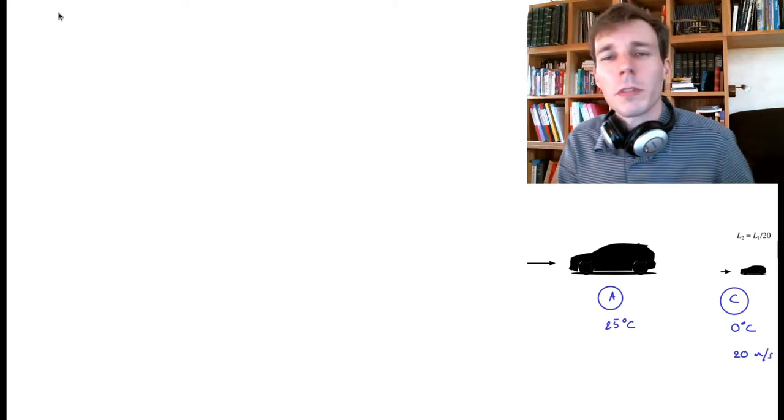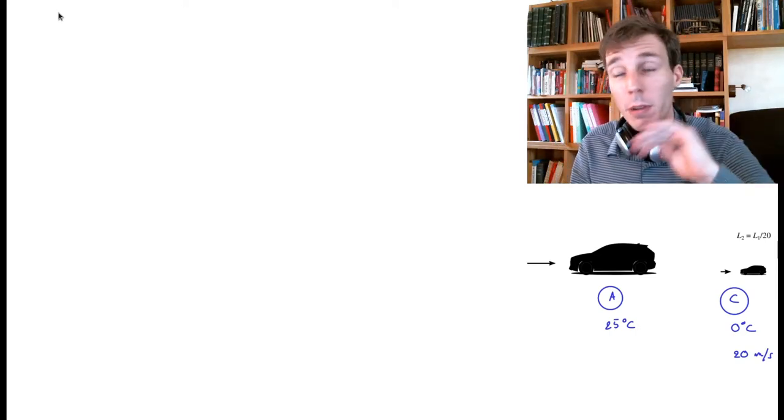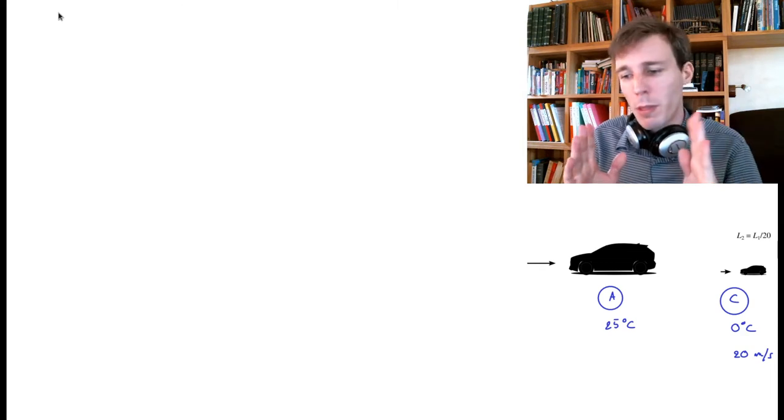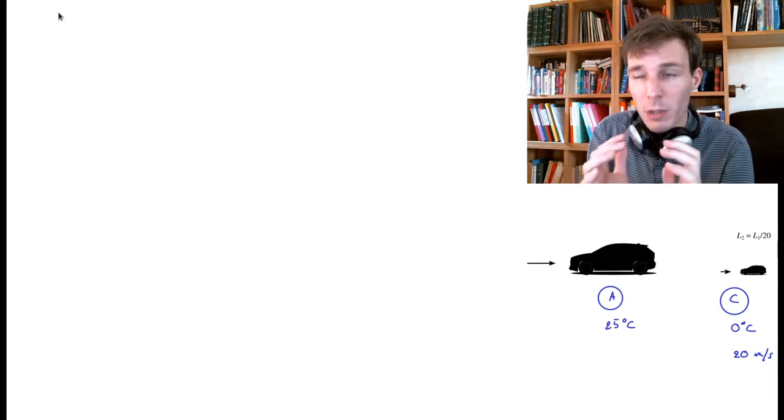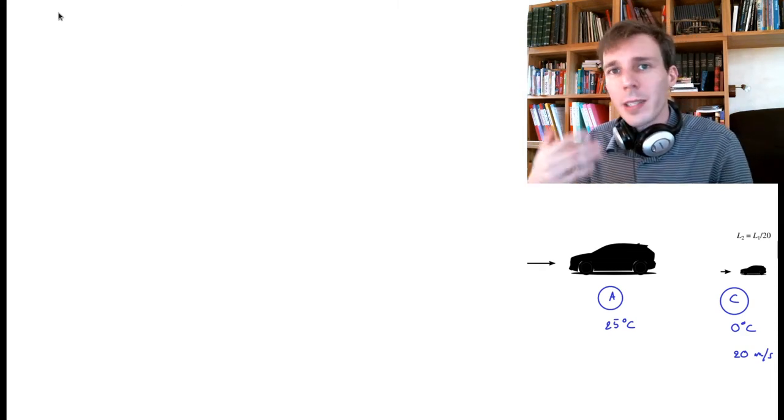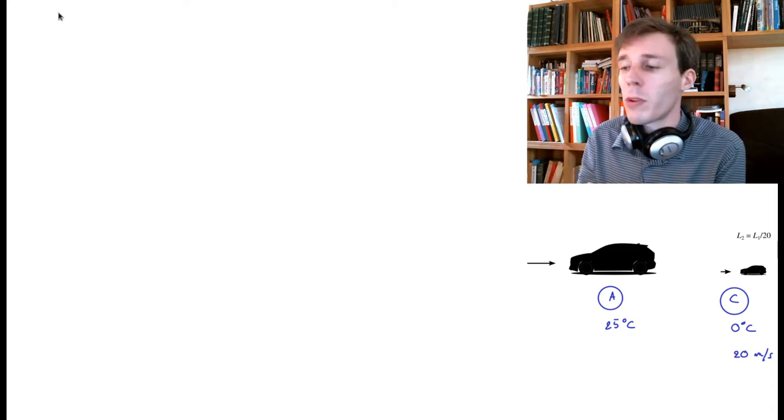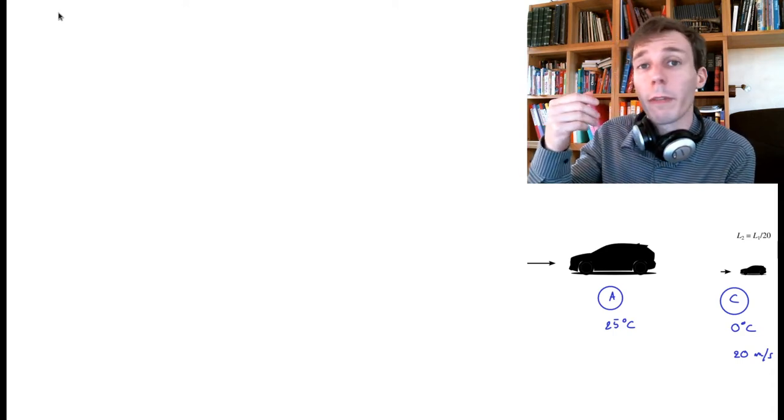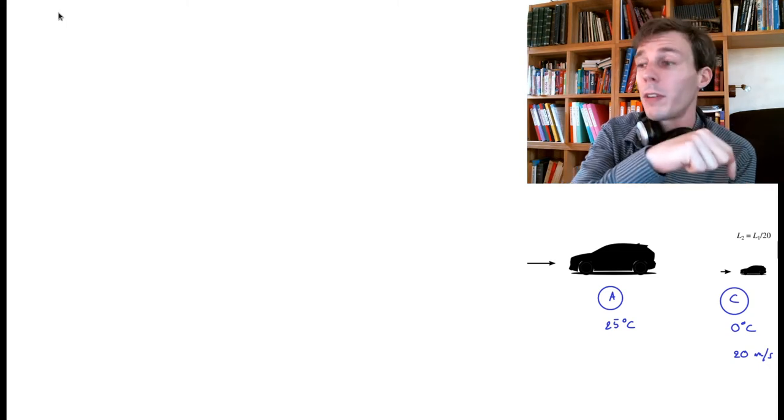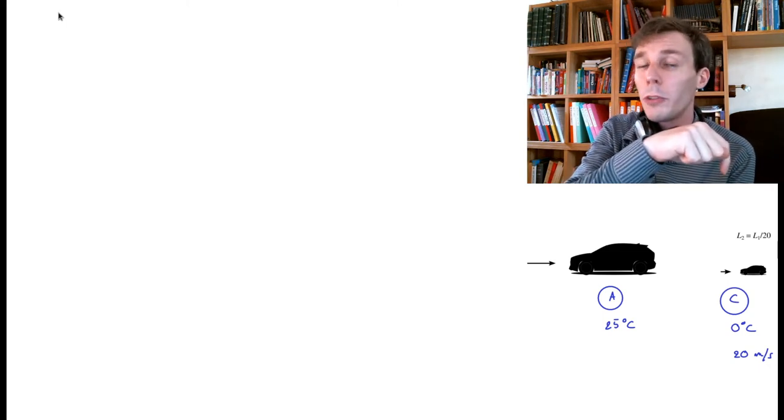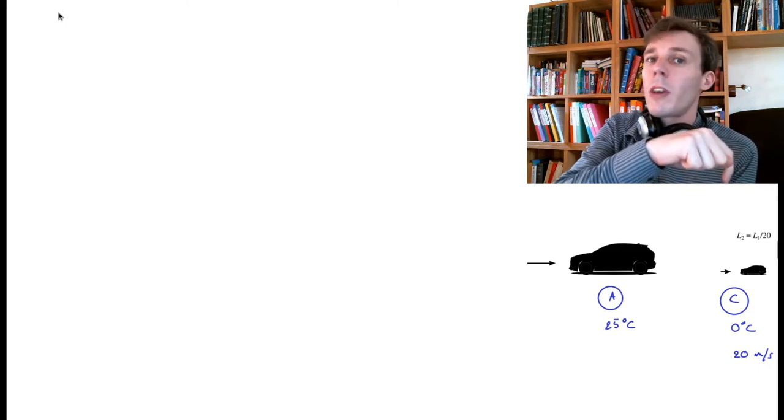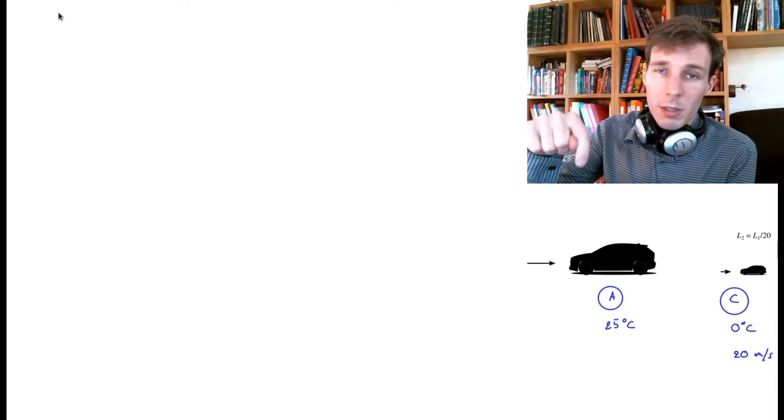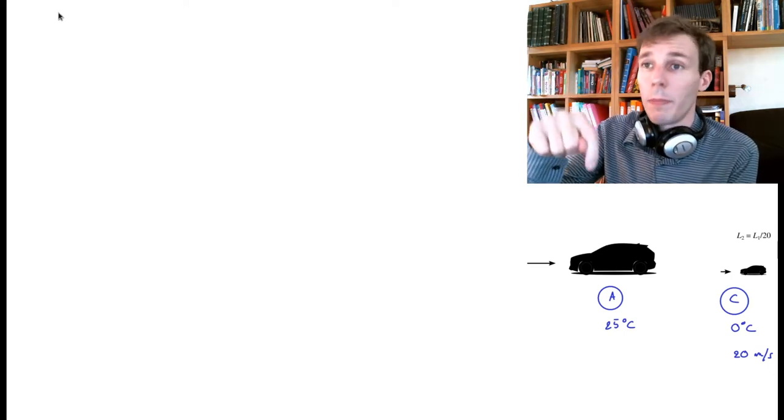In this problem, we again want to investigate the airflow around the real car. We do this with a 1 to 20 small scale model in a wind tunnel. This time, the input parameters are the properties of the flow on the wind tunnel model, on the small scale model. We want to know what are the equivalent conditions that we are simulating on the real car.